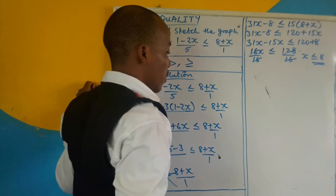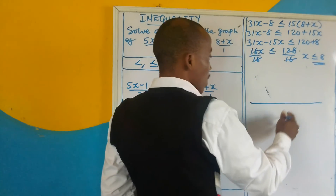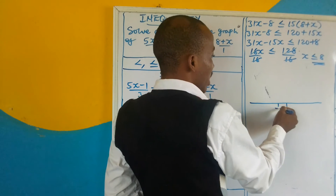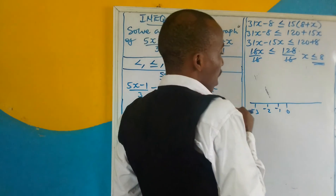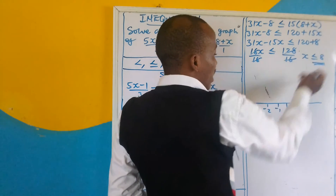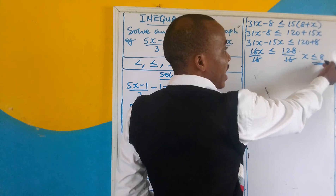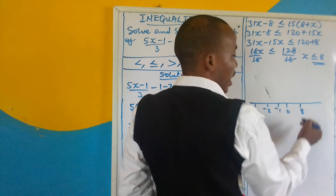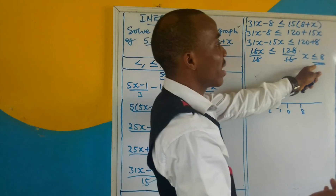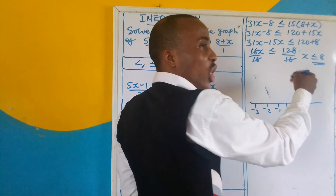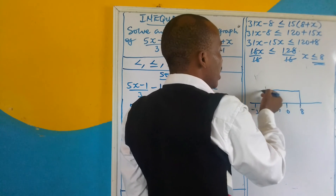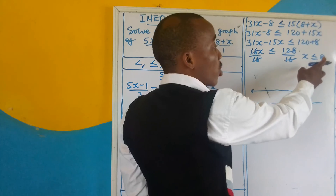It remains to graph. The question says we should graph. Based on the number line, this is 0. Every term at the left-hand side is negative — so negative 1, negative 2, negative 3, and so on. On the positive side, every term on the right-hand side is positive. Right now, what I need is positive 8. x is less than or equal to positive 8, so I fix in my 8 here. I will then shade to the left, because less than means left-hand side. And because it is equal to, I will shade the line at 8. If it was not equal to, I would only draw an open circle and shade to the left — but because it is equal to, I shade here.